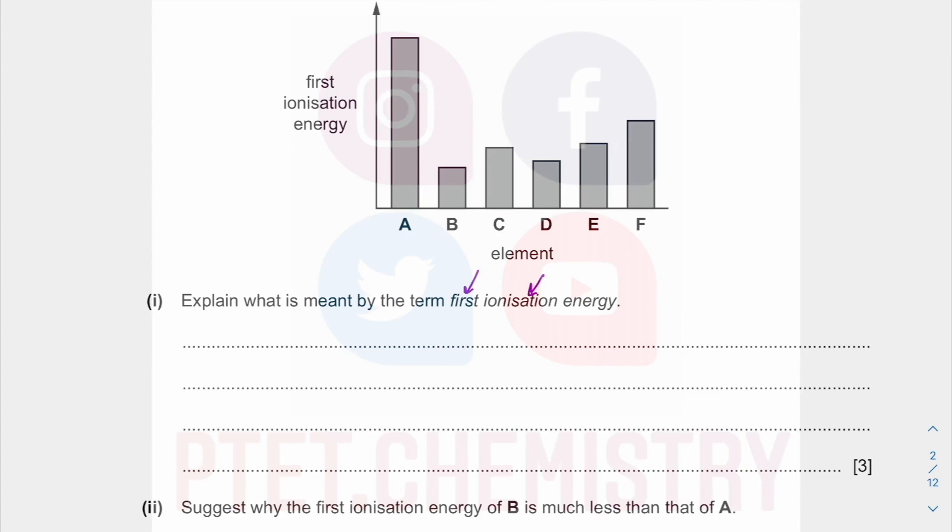since these are all A to F, I'll use a different character, M. So M gas going to M+ gas plus electrons. So that is for first ionization energy. Once you have written down an equation, I know they haven't asked you to, your definition comes from there really.